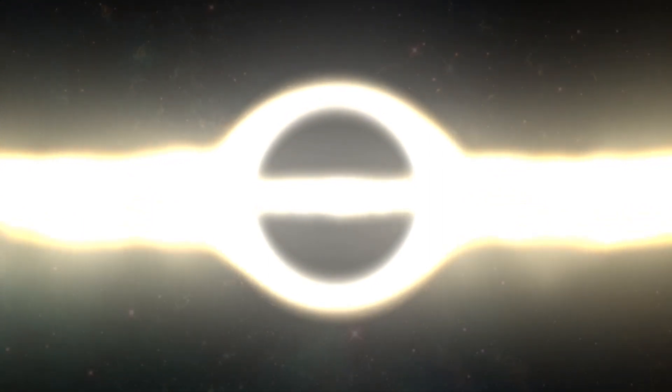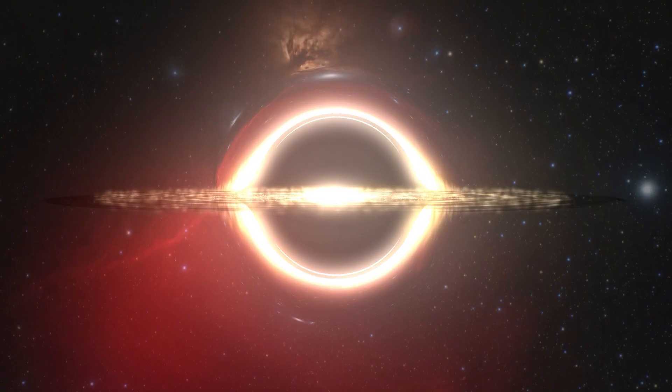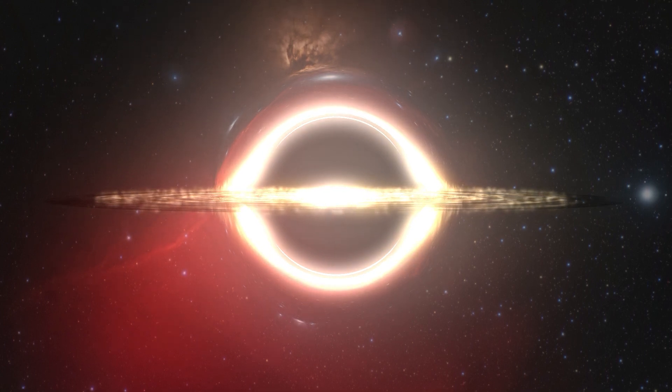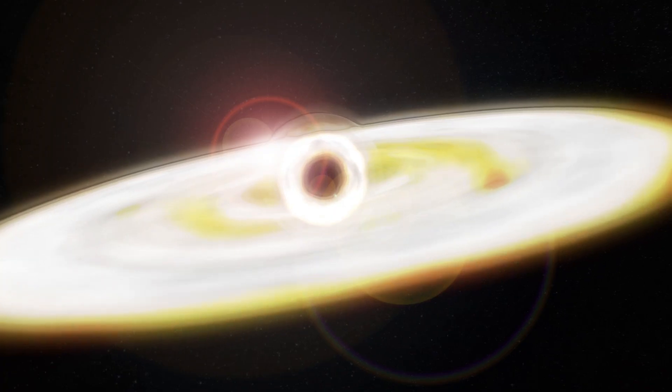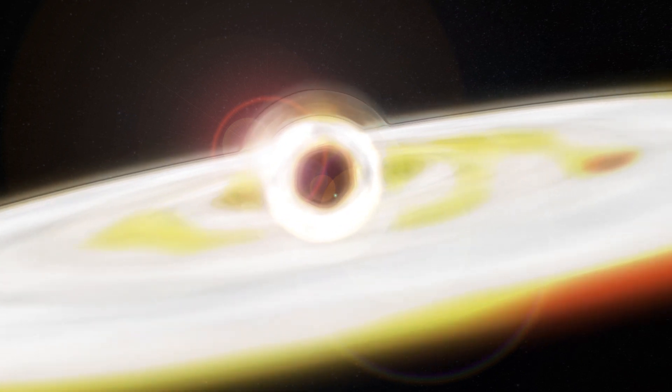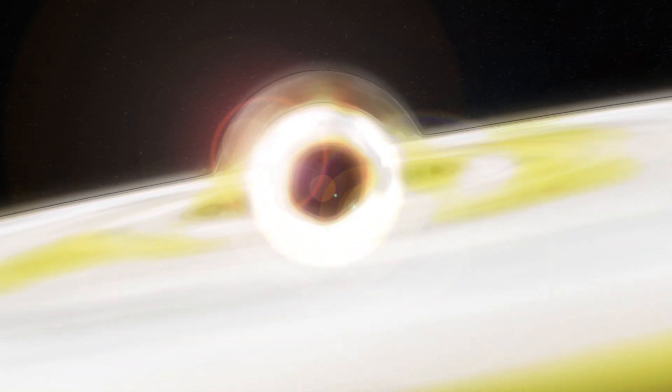In essence, the massive gravitational field of a black hole warps and bends spacetime to the point where it interferes with the passage of time. The intriguing result of the complex interaction between gravity and the structure of the universe, as outlined by Einstein's theory of general relativity, is this gravitational time dilation.